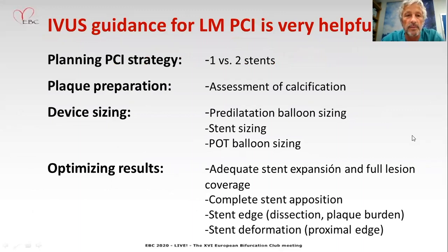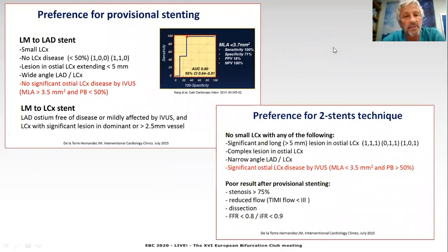We need to optimize the results of PCI of the left main for important reasons — for the prognostic relevance of this lesion. One of the key elements for doing this is the use of intravascular imaging, particularly IVUS, during PCI procedures. IVUS guidance is very helpful for planning the PCI strategy, for preparation of the plaque — particularly when it's calcified — for sizing of devices, balloons, stents, and to optimize the results, paying attention to expansion, position, stent edges, and potential deformation.